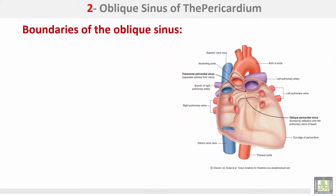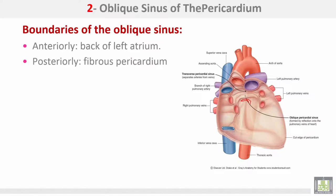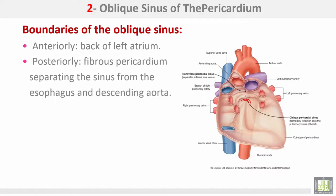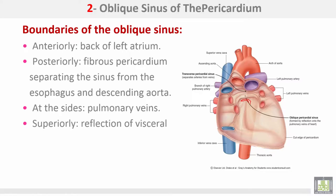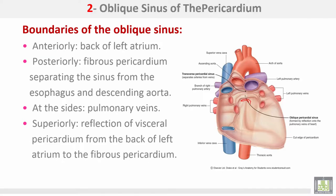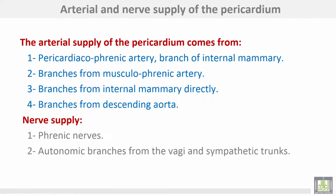The oblique sinus of the pericardium is bounded anteriorly by the back of the left atrium, and posteriorly by the fibrous pericardium separating the sinus from the esophagus and descending aorta. At the sides are the pulmonary veins. Superiorly, there is a reflection of the visceral pericardium from the back of the left atrium to the fibrous pericardium. Inferiorly, it is continuous with the rest of the pericardial cavity.